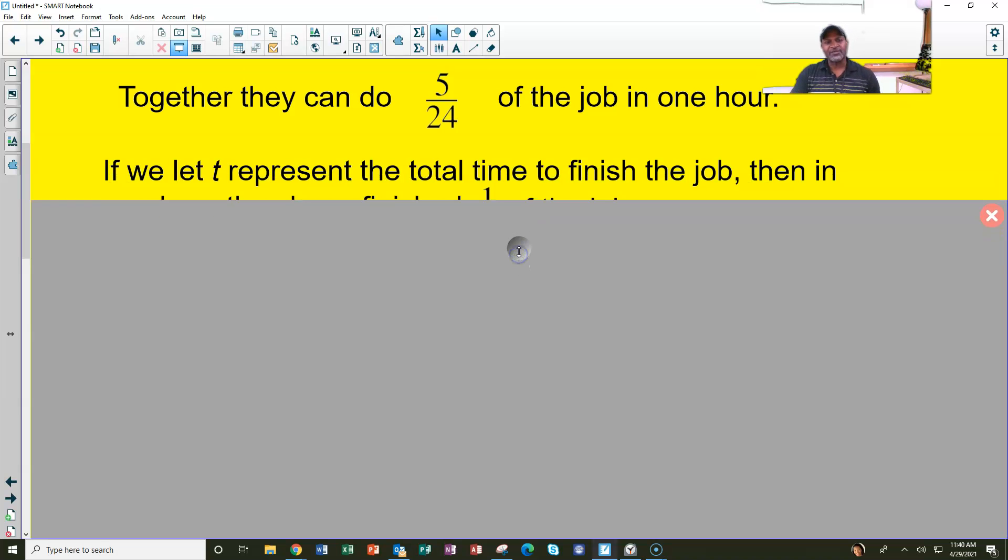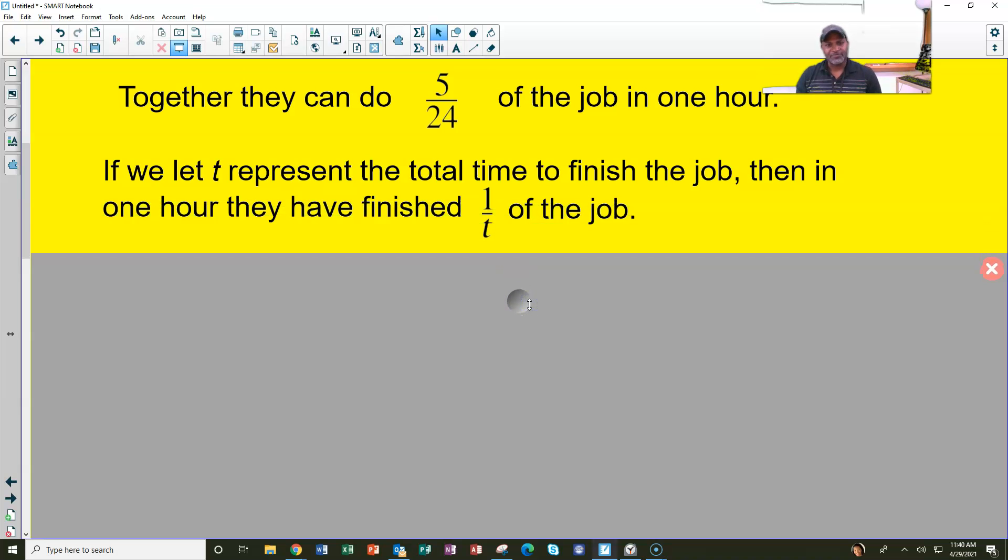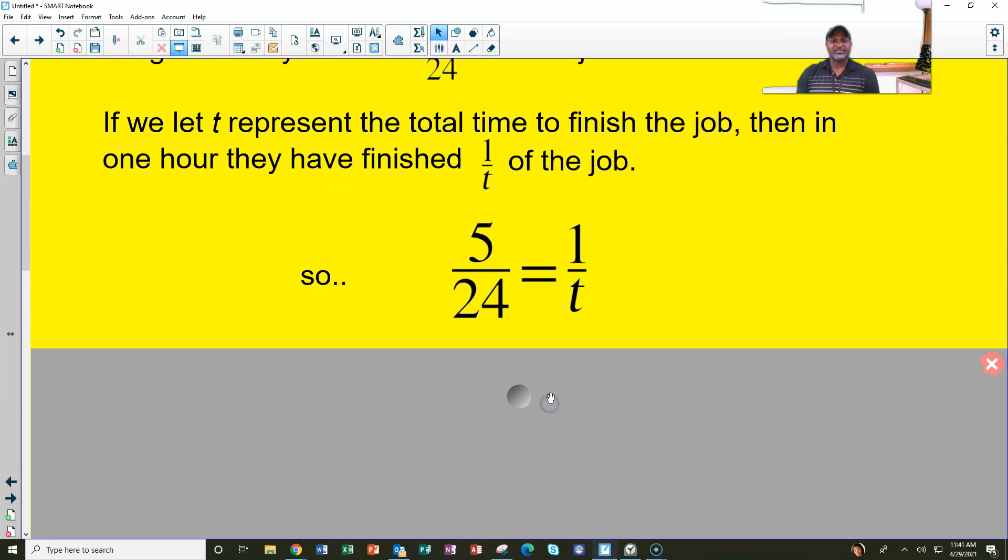Now, we don't know how long it's going to take them to finish the job as a total time. So we'll just call that T. But we do know that in one hour, however long it takes to finish the job, they have done one T-th of the job. That tells us, since we know what that is, that five over 24 is the same as one T-th of the whole job.